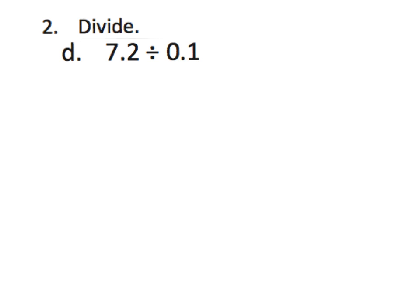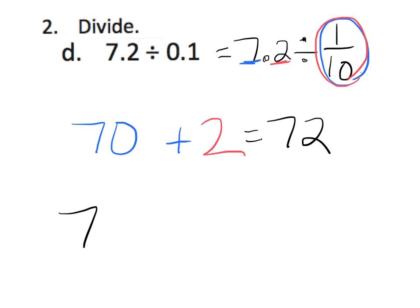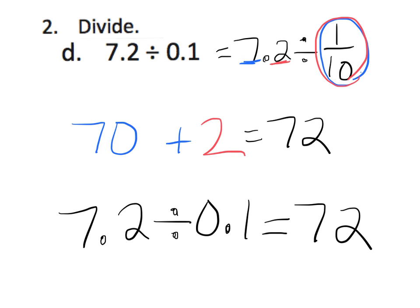Let's practice more of the same, only this time some scaffolding has been removed. We have 7.2 divided by one-tenth. How many tenths are in seven? The answer is seventy. How many tenths are in two tenths? The answer is two. So the answer is seventy-two — 7.2 divided by one-tenth equals seventy-two.